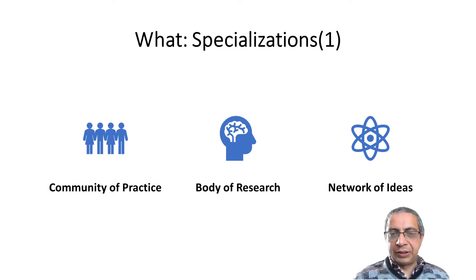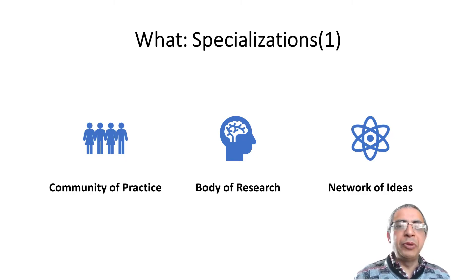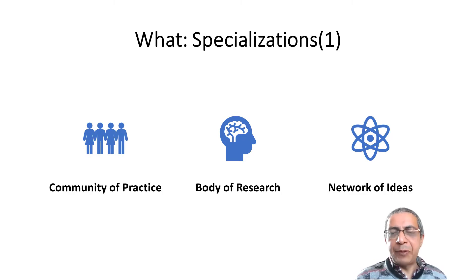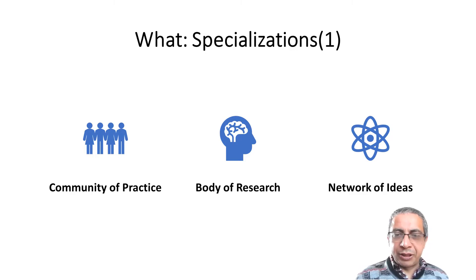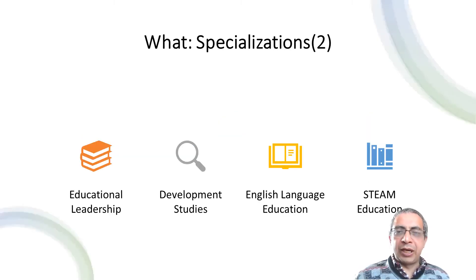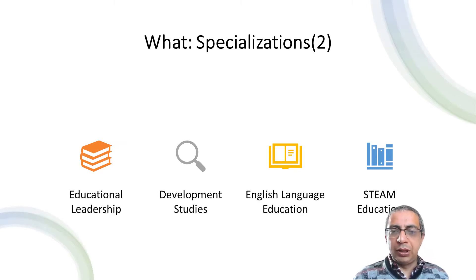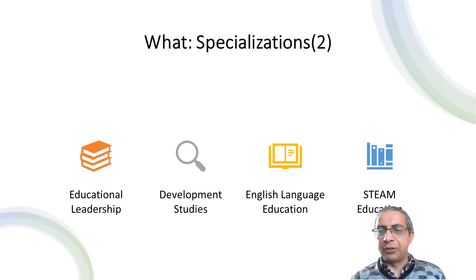When we talk about specializations, they are formed based on the community of practice, body of research, and network of ideas. These specializations are not just subjects — they represent recent research, a network of ideas, and ongoing practice in the community. We have four areas of specialization: educational leadership, development studies, English language education, and STEM education.